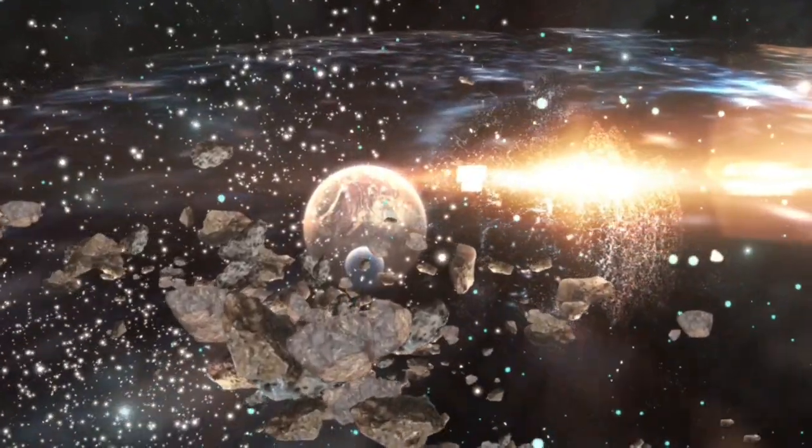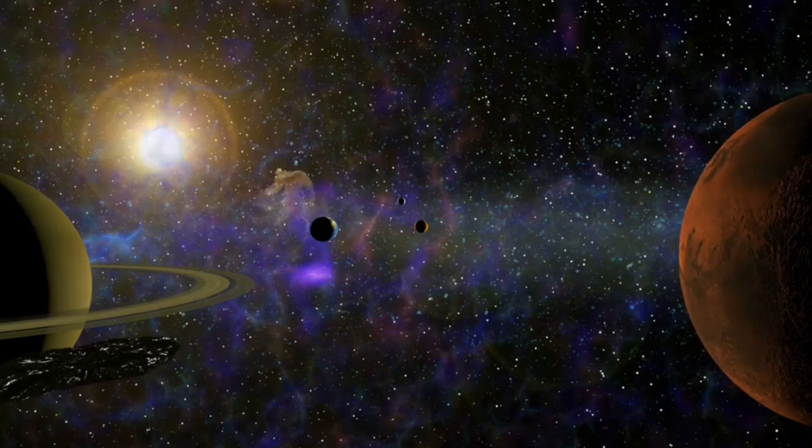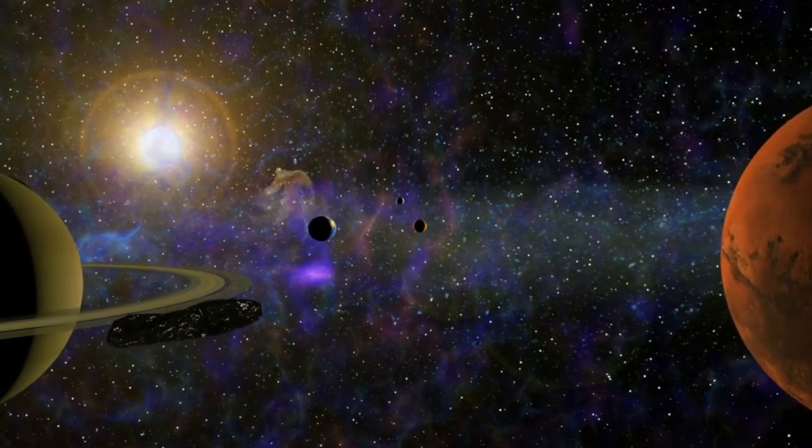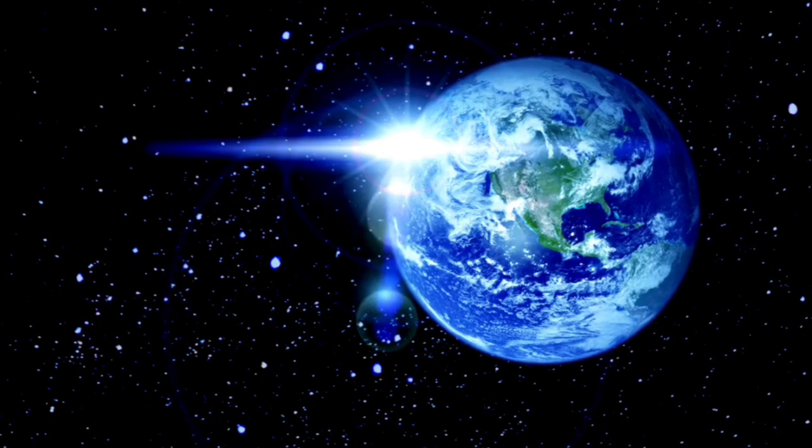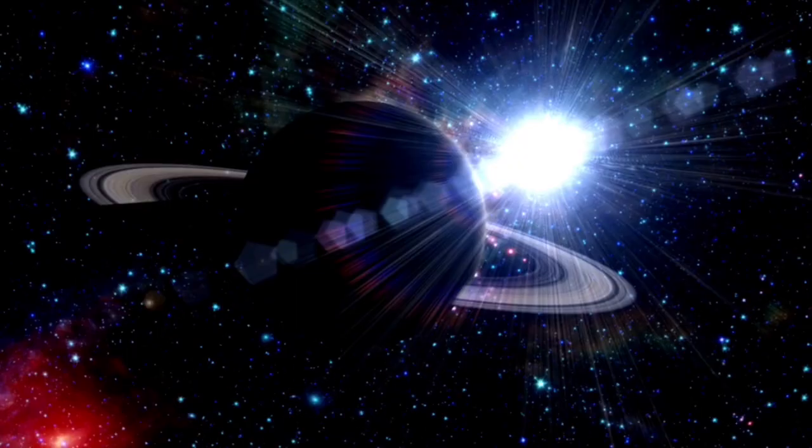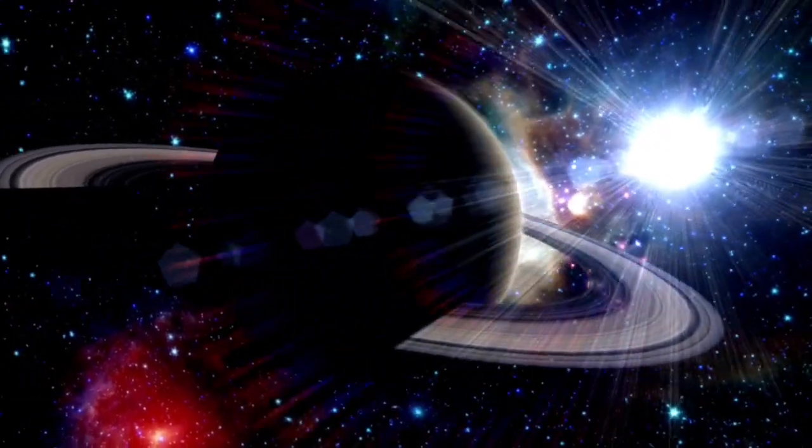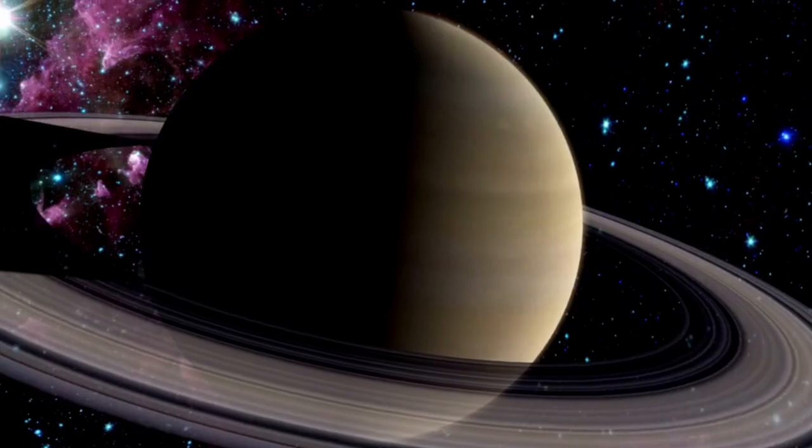Though Proxima b receives sunlight comparable to Earth's, its closeness to a red dwarf star exposes it to volatile radiation and magnetic forces, endangering the stability of any atmosphere. The actual presence of liquid water remains uncertain.